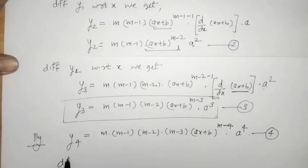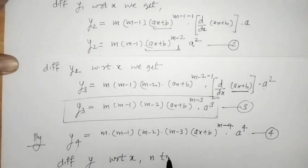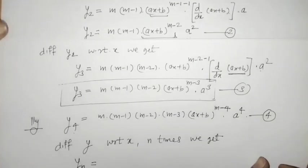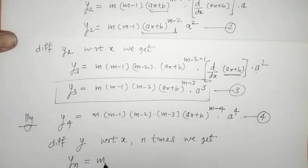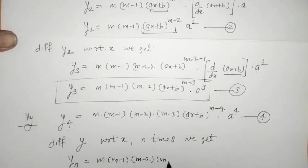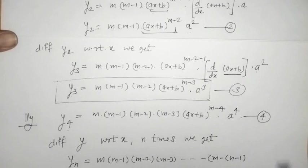By differentiating y with respect to x n times, we get the nth derivative yn. Observing the pattern, we write: yn = m(m−1)(m−2)(m−3)···(m−n+1) into (ax + b)^(m−n) into a^n.